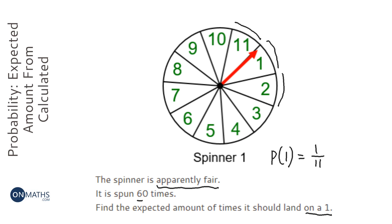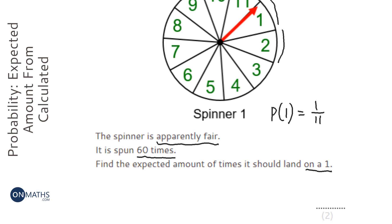Now if we spin it 60 times, to get the expected amount of 1s, we do the amount of times we spin it, which is 60, and times it by the probability, which is 1 over 11.